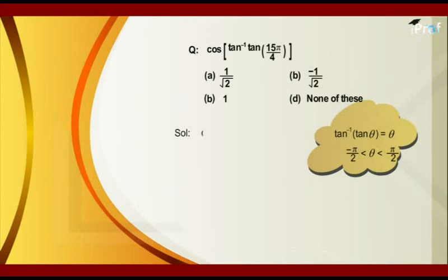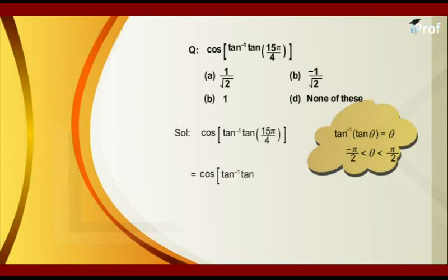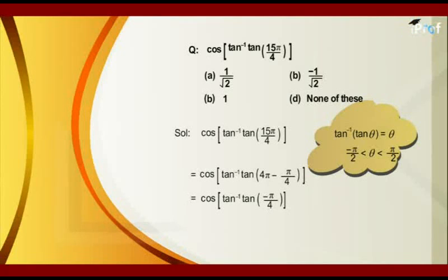To get to the question: cos of tan inverse(tan(15π/4)) becomes cos of tan inverse(tan(4π minus π/4)), which comes out to be equal to cos of tan inverse(tan(minus π/4)), which is equal to cos of minus π/4, and that is equal to 1 upon root 2.